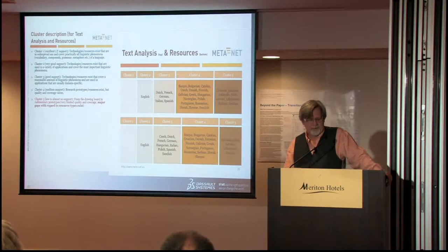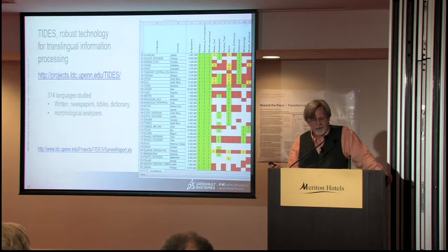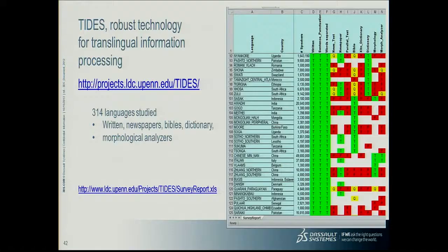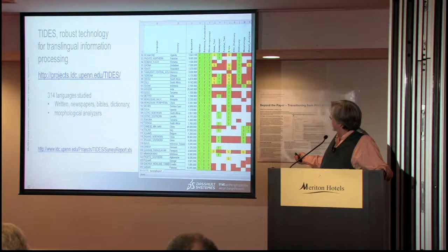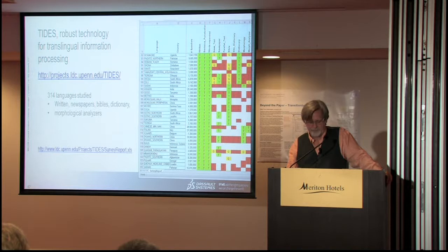There was also similar work done in the US by TIDES in which they studied 314 languages and examined which resources existed for each — like newspapers, Bibles, dictionaries, morphological analyzers — and made a big table. The first column just said whether the language is written or not, which is why there's a lot of green. And then there are very few languages which even have newspapers in that language. This was done a few years ago, but it's another resource with pointers to some of the resources specified in the table.